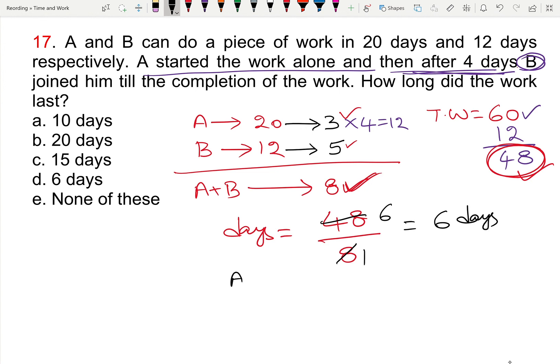So A worked 4 days, then A and B together. How long did the work last? 4 plus 6 is nothing but 10 days. So 10 days is the right answer. That is A.